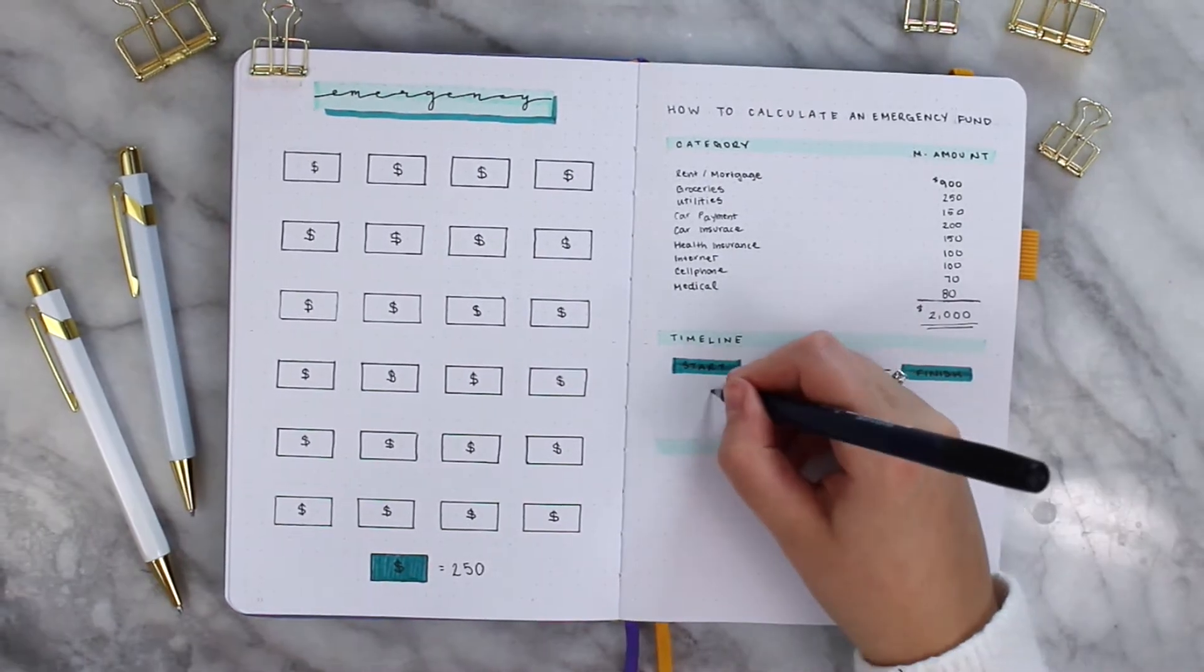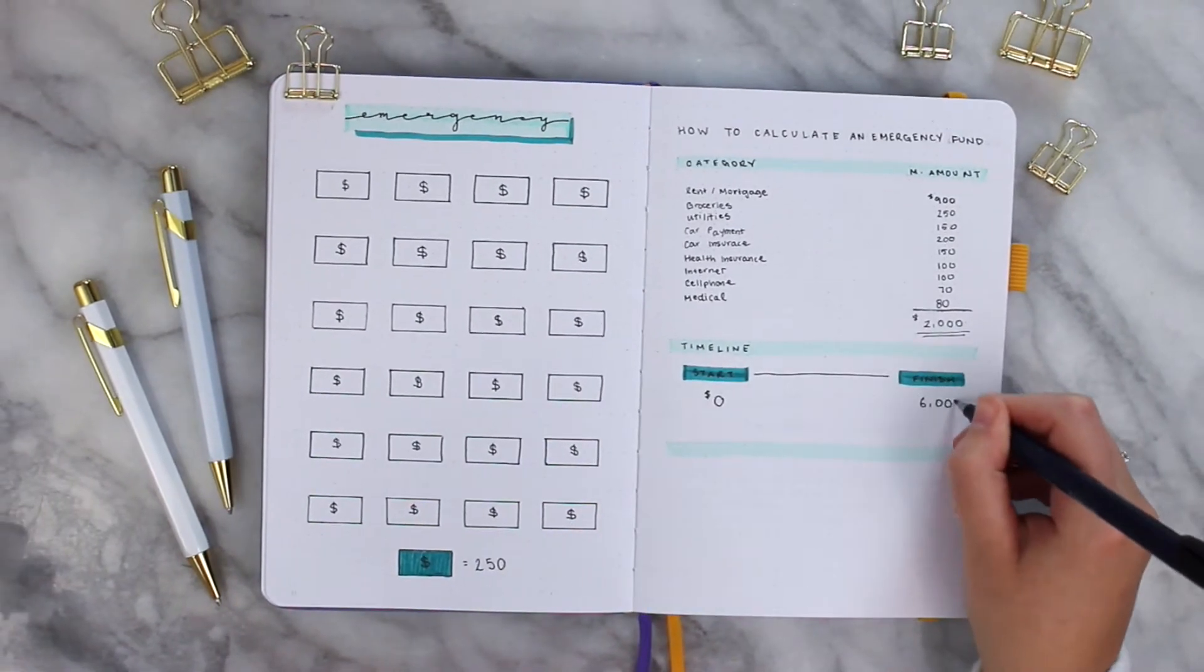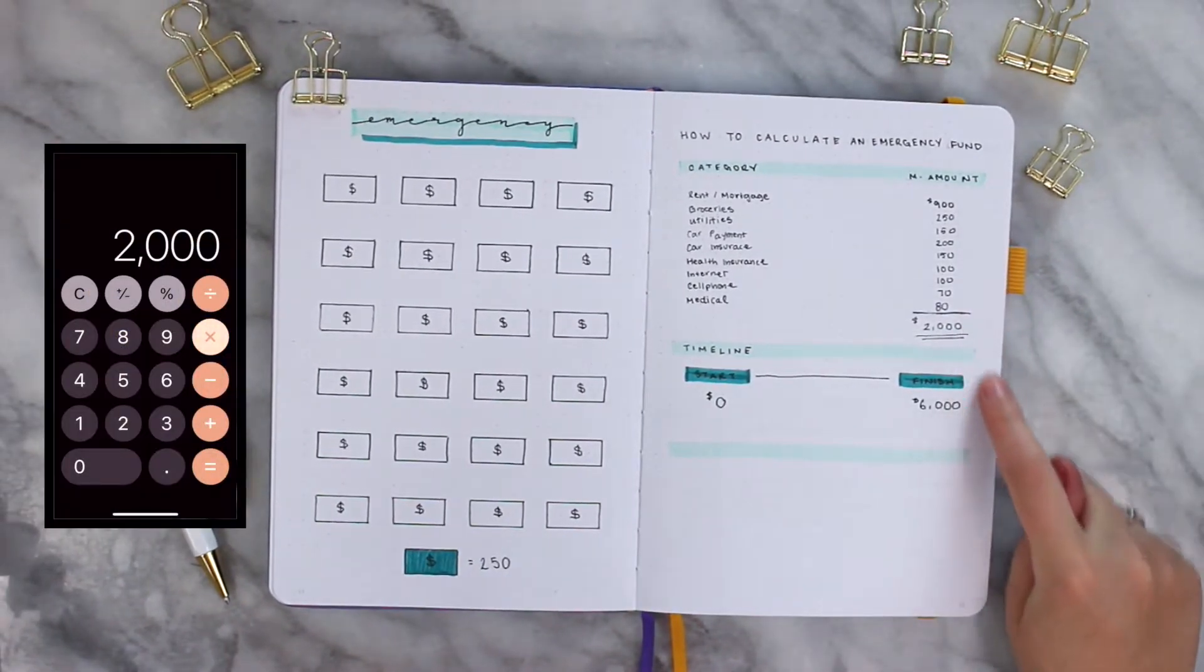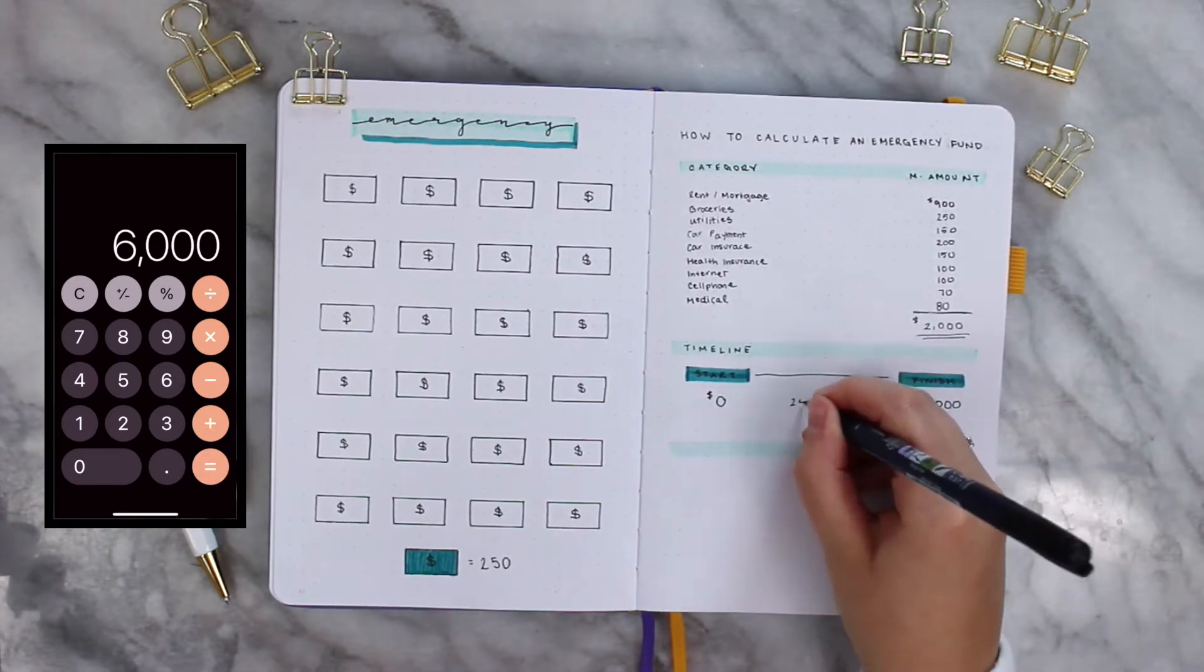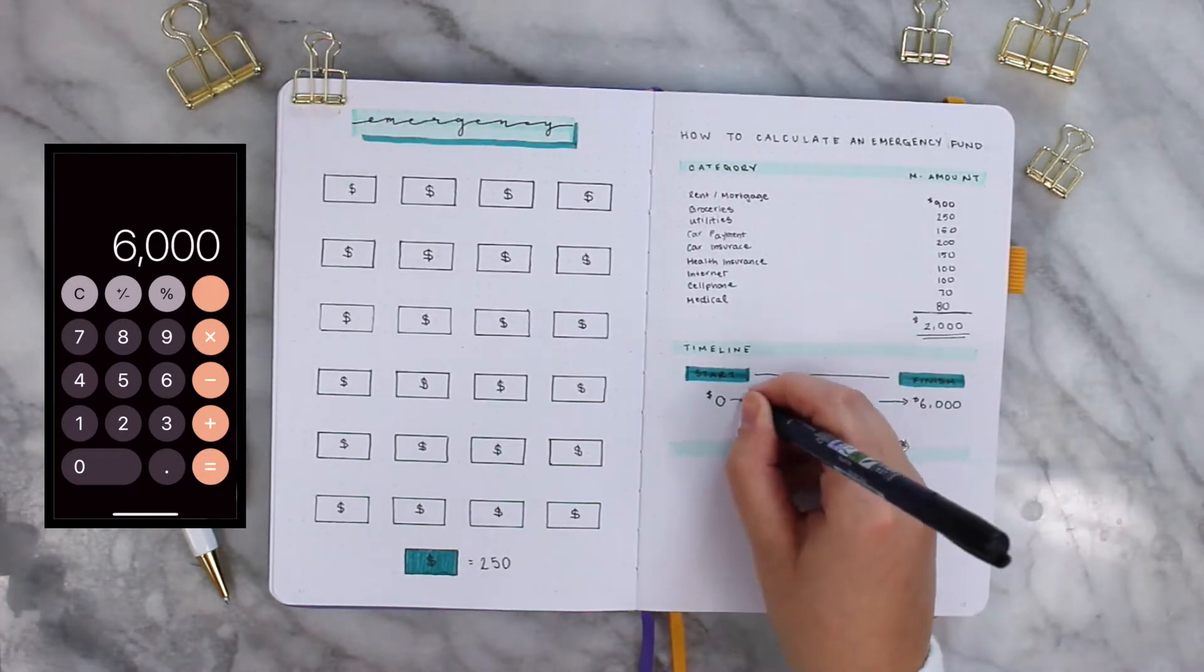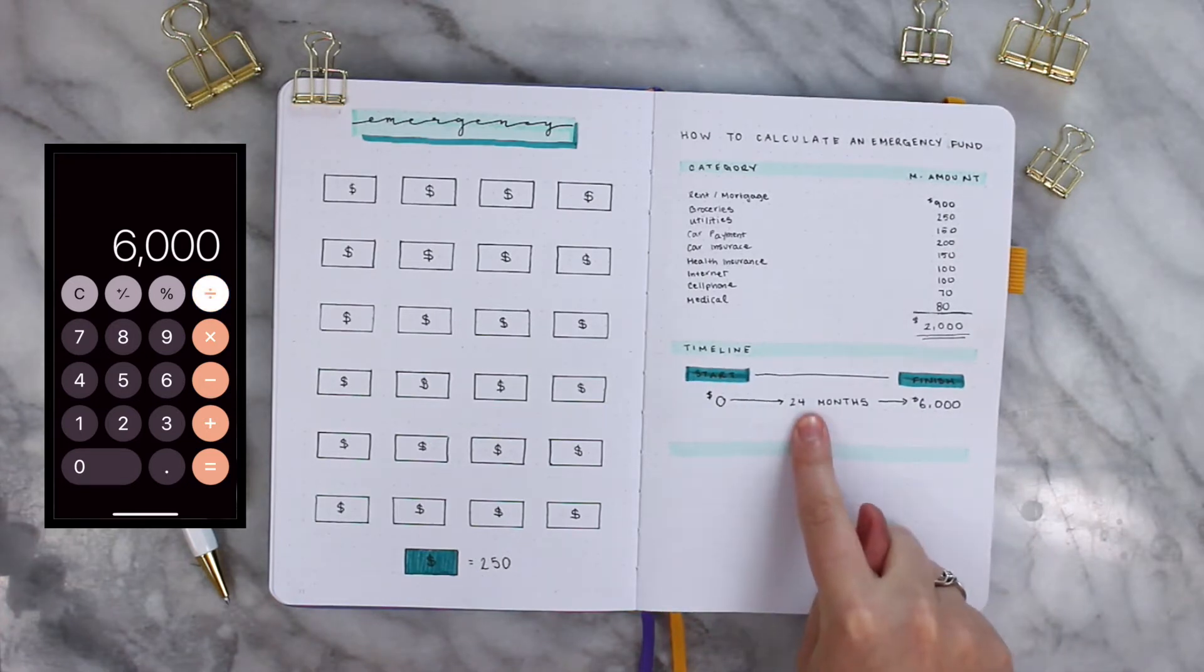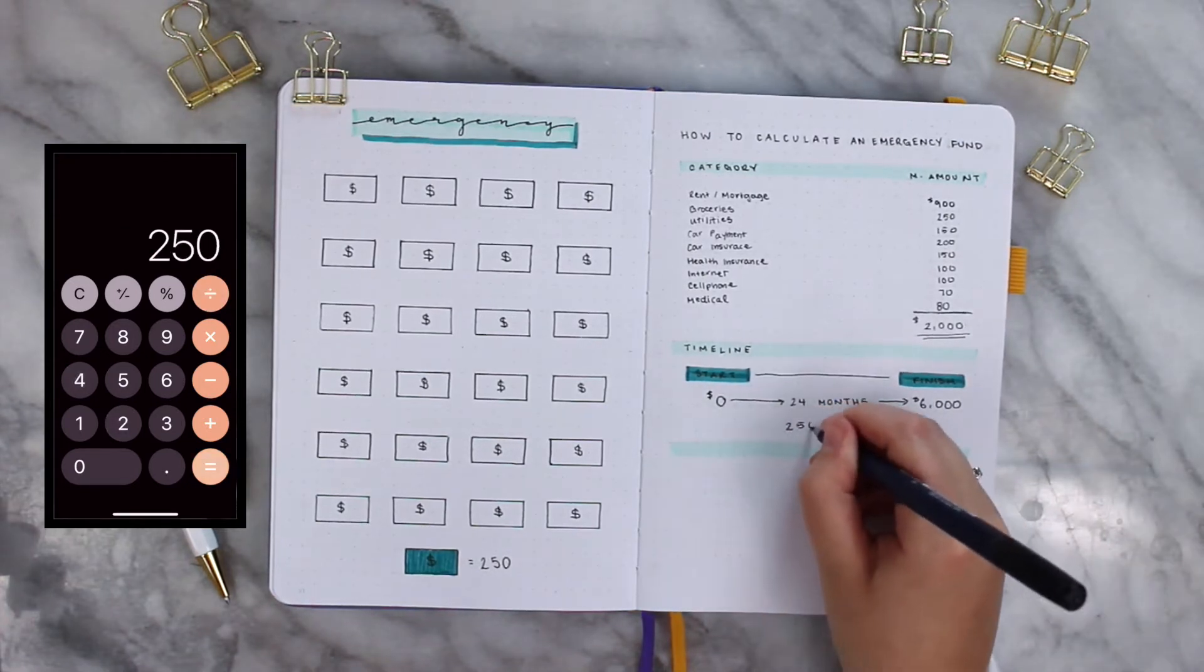Now this timeline section, I just had a start and finish. That $2,000 represents one month, so I'm going to multiply it by three to get $6,000. And I want to save this $6,000 over 24 months. So how much do I need? For every single month, $250.